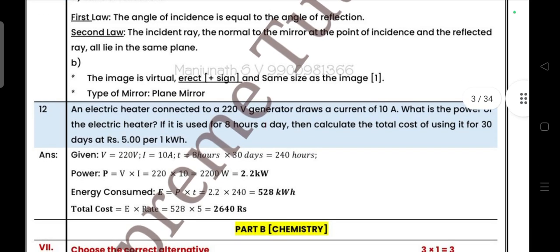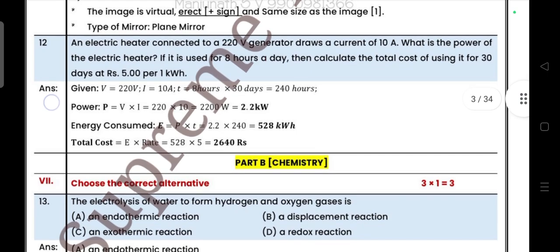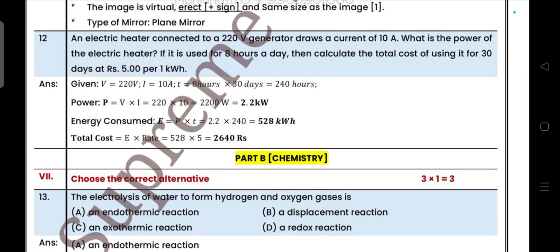Question number 12: an electric heater connected to a 220 volt generator draws a current of 10 ampere. What is the power of the electric heater? If it is used for eight hours a day, then calculate the total cost of using it for 30 days at Rs. 5.00 per one kWh. Take answers.